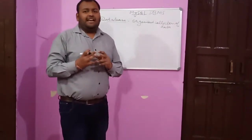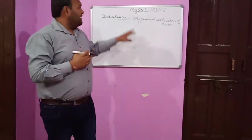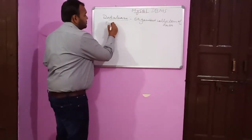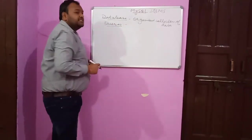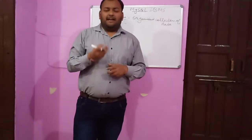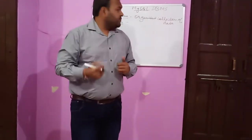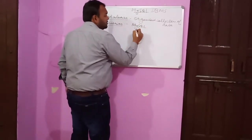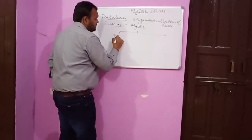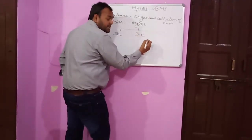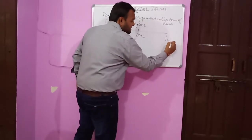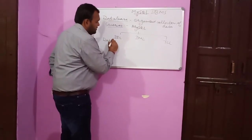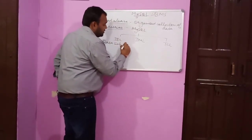Now, what about the various statements? We have to implement queries on MySQL. Queries are the commands that a user can ask MySQL to access the data. There are three types of statements in MySQL: number one, DDL; number two, DML; and number three, TCL.